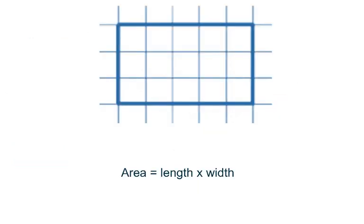But what we want to look at is this formula that we have down here. Area equals length times width. So what we're looking at here is the length multiplied by the width.